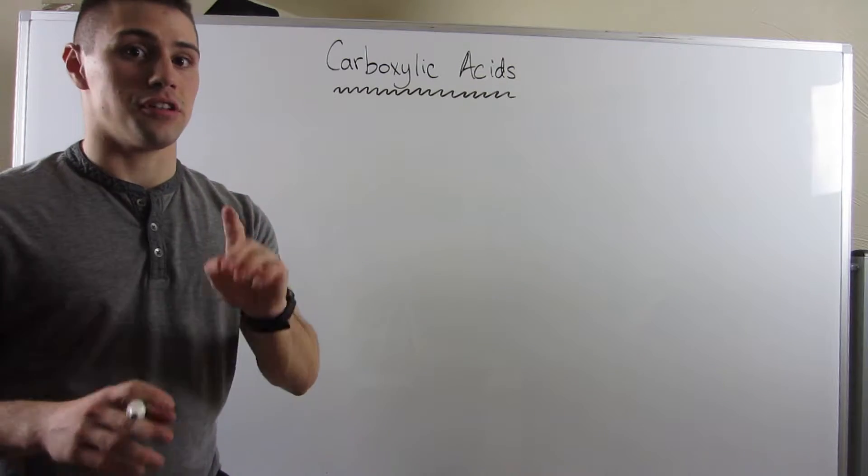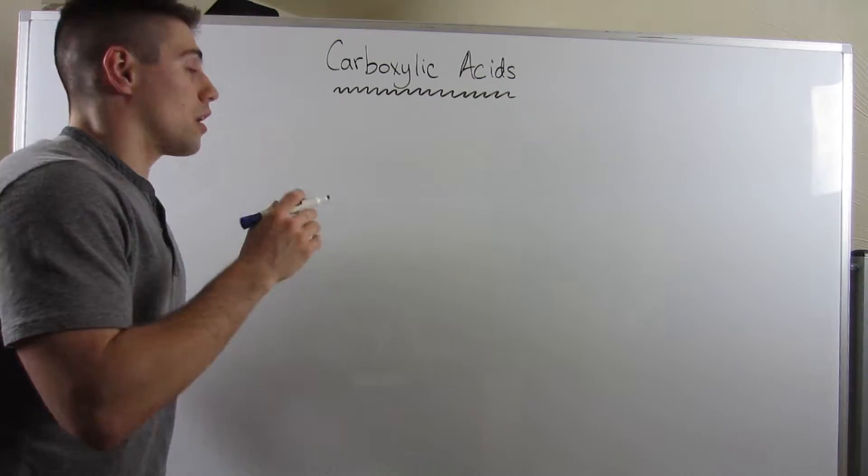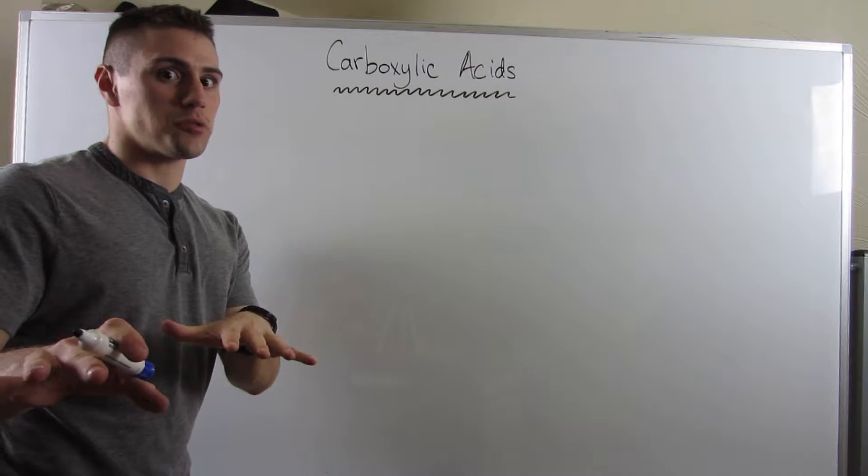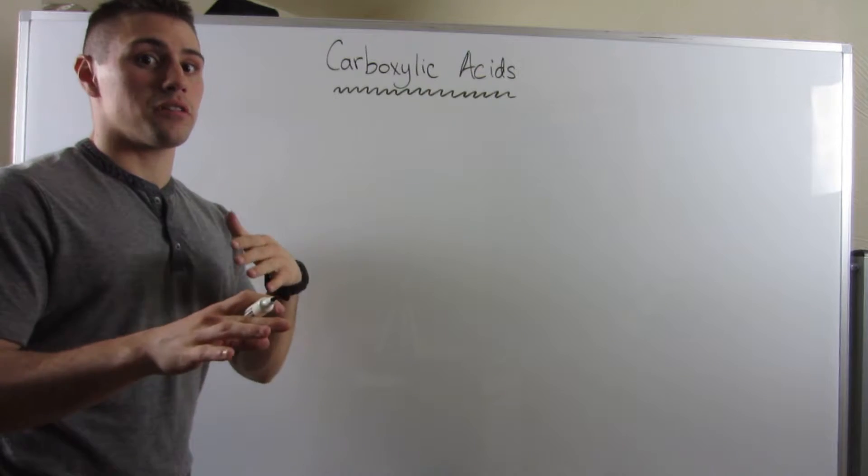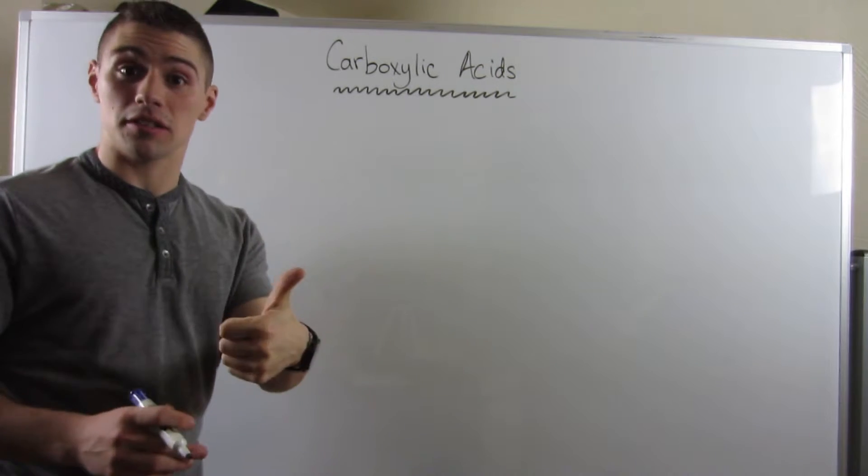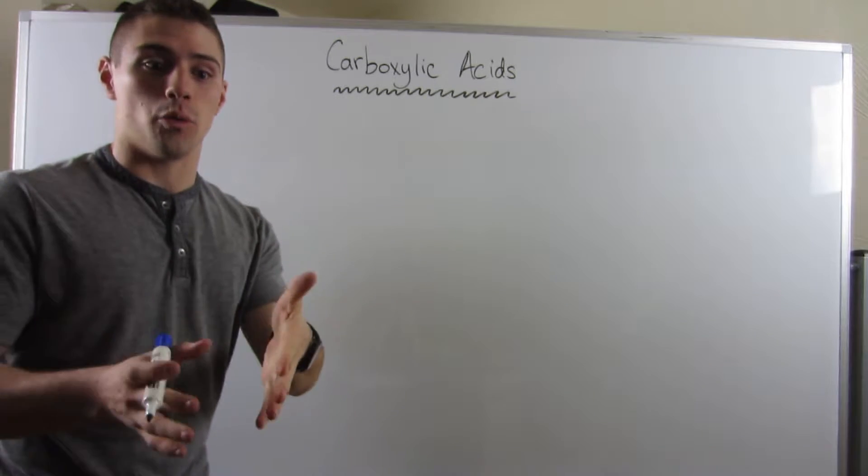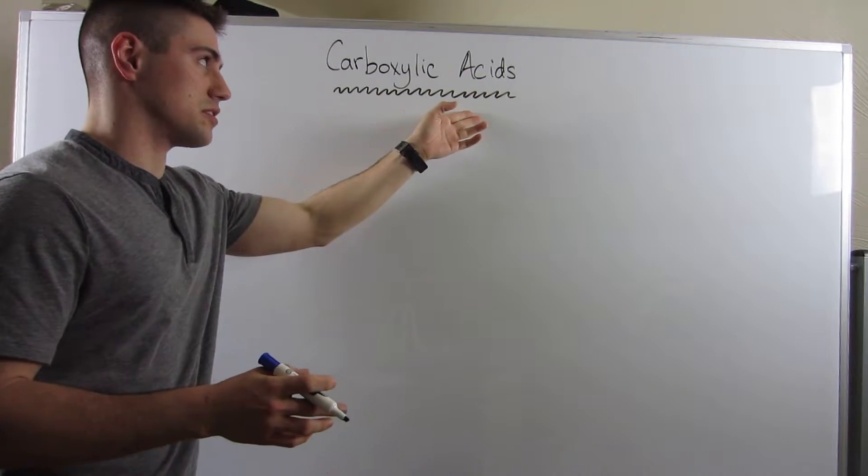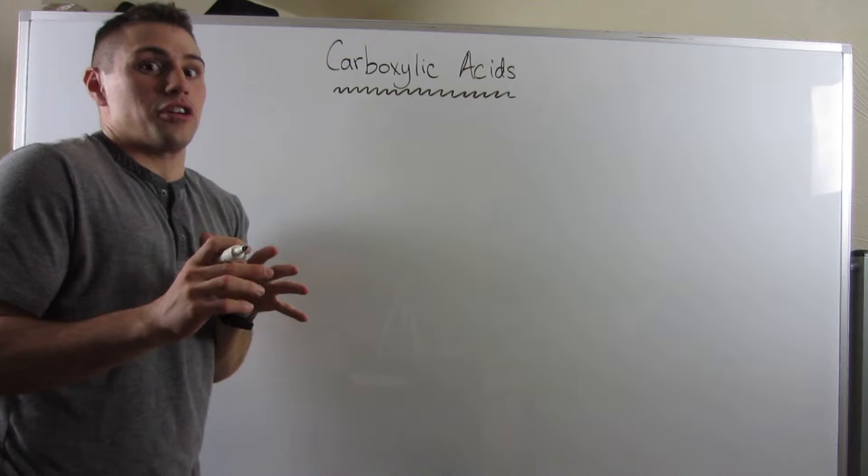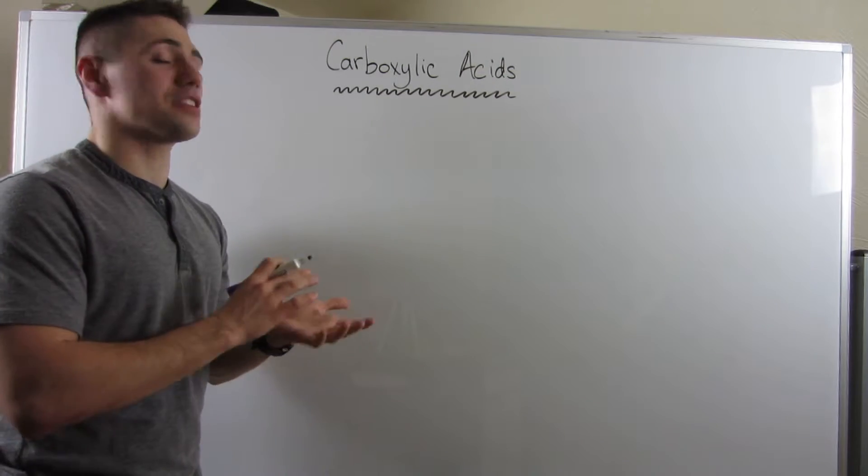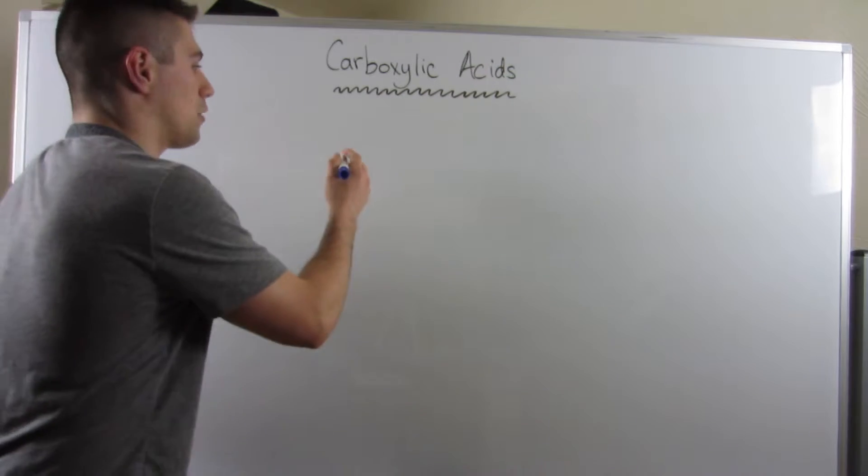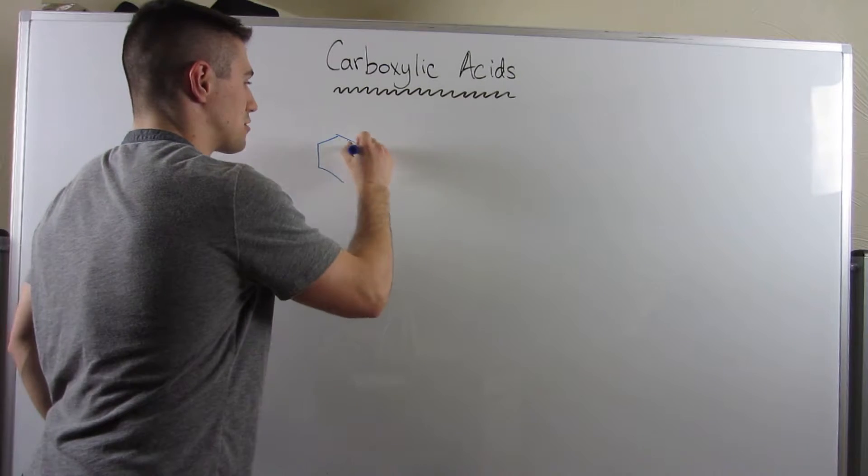I want to tackle one reaction in this video. A little throwback, hopefully I don't give you too much PTSD, but we're going to talk about how you can attack carbon dioxide with a Grignard reagent to make a carboxylic acid. Don't quiver at your computer screen, I think you're going to see that this is super easy. Let's take this sample reaction right here.